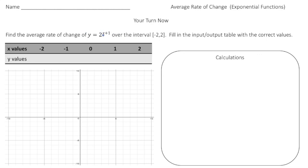If I replace x with negative two, that gives us 2 to the negative first power, which equals one-half. If I plug in negative one, negative one plus one is zero, and anything to the zero power is one. If x is zero, that's 2 to the first power, which is two. For x equals one, one plus one is two, so it's four. And then 2 to the third power gives us eight. So our points are: (−2, 1/2), (−1, 1), (0, 2), (1, 4), and (2, 8).